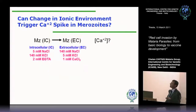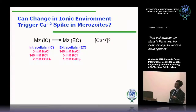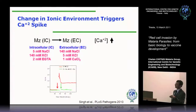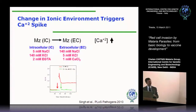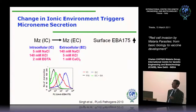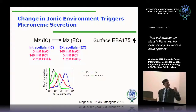We tested that by suspending merozoites in intracellular-like buffer — low sodium, high potassium, no calcium — then switching the buffer to the reverse: high sodium, low potassium, and some calcium. If you switch from IC to EC, you can see an increase in intracellular calcium. So it appears that it's the ionic environment that might be the signal to lead to a rise in intracellular calcium. When you change the buffer to EC, you also get an increase in EBA-175 on the surface, which you block with BAPTA. So the ionic environment is what triggers the calcium spike and microneme release.